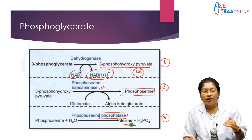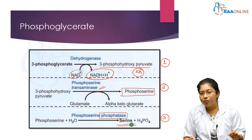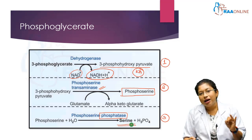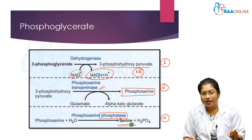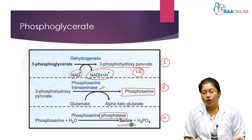This is how we synthesize serine from 3-phosphoglycerate in a three-step reaction: first step involves dehydrogenation, second transamination, and third a phosphatase reaction to remove the phosphate group and obtain the serine compound.